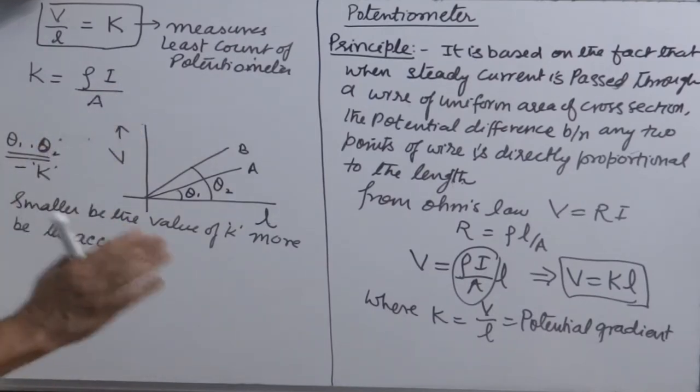An instrument or device is said to be more sensitive when value of least count is smaller. So smaller be the value of K, more be the accuracy of the device.